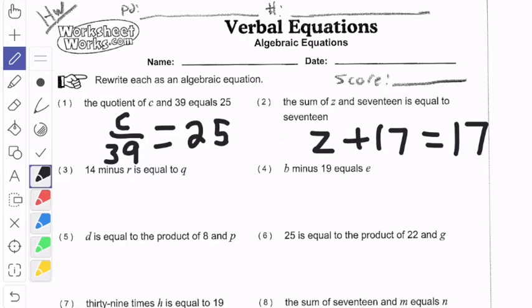One more. So B minus 19 equals E. So B minus 19 equals E. Okay, so let's go on to the next page.